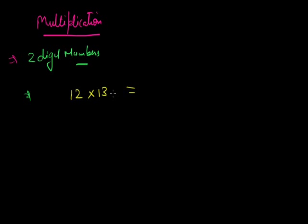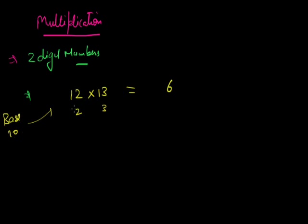The numbers are close to 10, so the base is 10. 10 plus 2 is 12, and 10 plus 3 is 13. We multiply 2 and 3 to get 6 — just the unit digit since the base is 10. Then we add 12 plus 3 (or 13 plus 2) to get 15. So 12 times 13 equals 156.